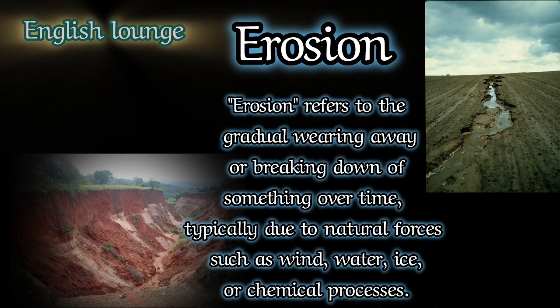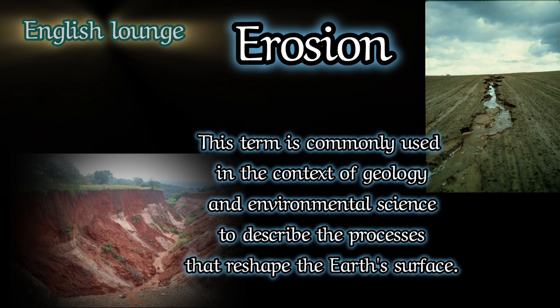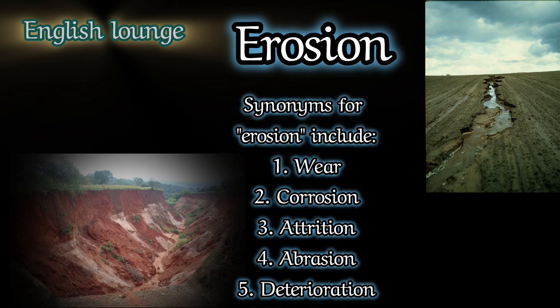Erosion refers to the gradual wearing away or breaking down of something over time, typically due to natural forces such as wind, water, ice, or chemical processes. This term is commonly used in the context of geology and environmental science to describe the processes that reshape the Earth's surface.